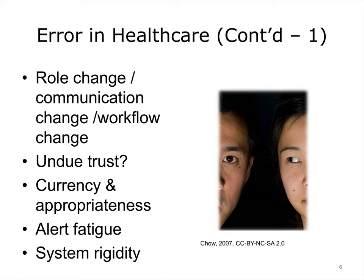Errors in healthcare come from problems with currency and appropriateness. A medication considered safe today may suddenly be pulled from the market, requiring changes to all systems that incorporate that medication quickly. If a decision rule exists suggesting the use of a now-no-longer-safe medication, what is your plan for getting that change instituted in all systems containing that rule? If it is in a centralized location, great, but many systems in use today are distributed and don't talk to one another. Does this mean multiple off-site trips to update the rules? Keeping the rules, the data, and the algorithms all current is a huge problem in health IT. If not, error propagates extremely fast with just the touch of a button.